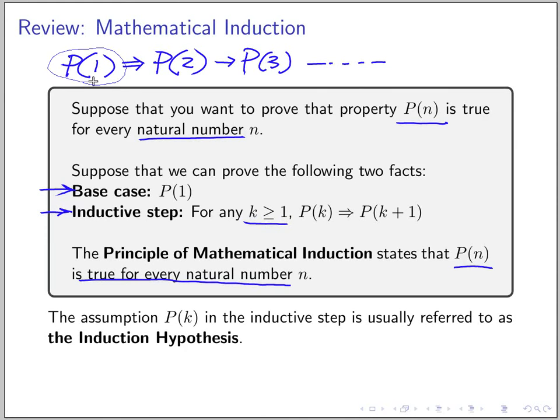So you start from P(1), this is the base case, and then the inductive step can be used to imply that P(1) implies P(2) and so on. For any natural number n, say maybe a thousand, after you repeatedly use the inductive step you reach the point when you know that P(1000) is true, and this can keep going on and on.